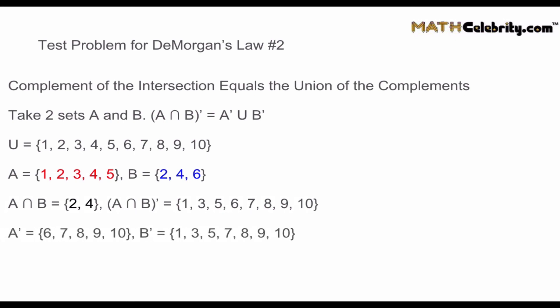Now let's find A complement and B complement. A complement — everything not in A — is {6, 7, 8, 9, 10}. B complement — everything not in B — is {1, 3, 5, 7, 8, 9, 10}. Taking A complement union B complement — everything in A complement or B complement — we get {1, 3, 5, 6, 7, 8, 9, 10}, which matches the complement of A intersection B exactly.